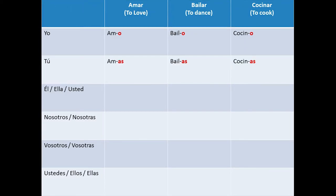Tú: amas, bailas, cocinas. Él, ella, usted: ama, baila, cocina. Remember that usted is the formal way for the second person in a singular form.